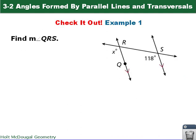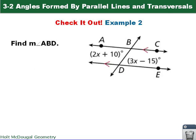Now it's your turn for the check it out. Find the measure of angle QRS, write it on your paper, and bring it to school the next day. This is the check it out for example 2 that you need to be doing. Good luck.